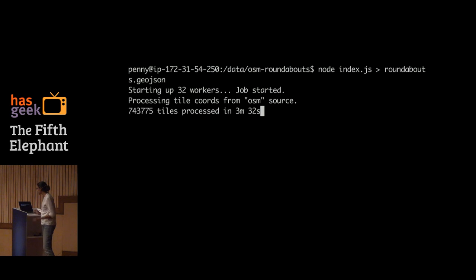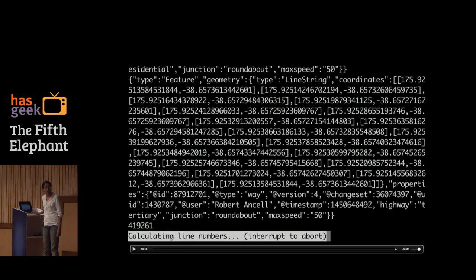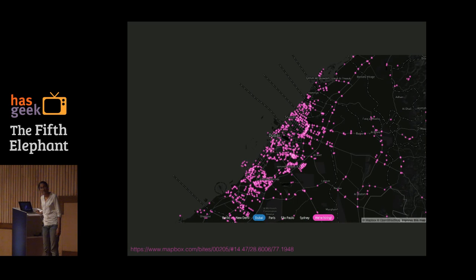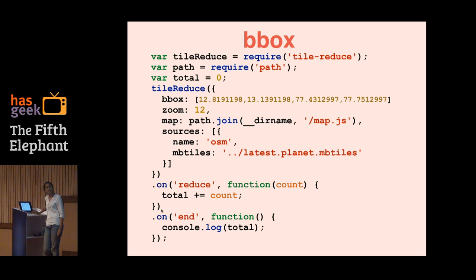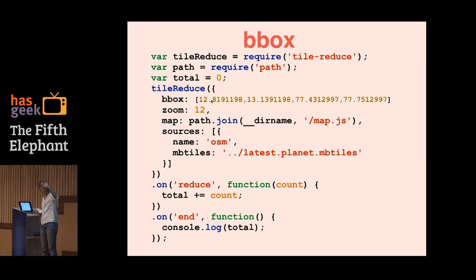We ran this on an EC2 with all the data of the world and it took about 15 minutes and 48 seconds. We counted about 419,261 roundabouts. This is a visualization of the roundabouts data — here are all the roundabouts in Paris, and here are all the roundabouts in Dubai. One thing I did not mention is that you can also constrain TileReduce to work on areas you're really interested in, specified by something called a bounding box. A bounding box is just a rectangle on the map, defined by the minimum X, minimum Y, max X, and max Y.